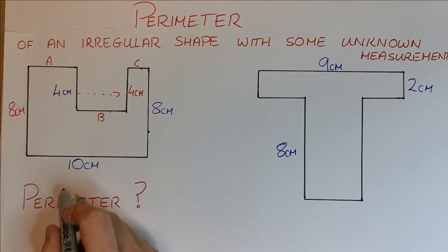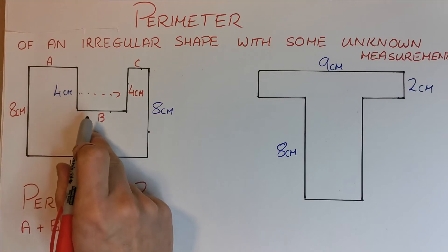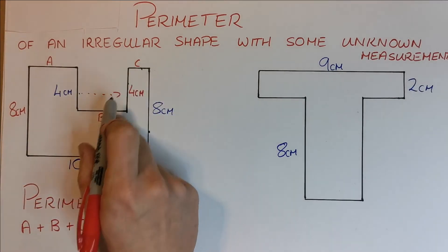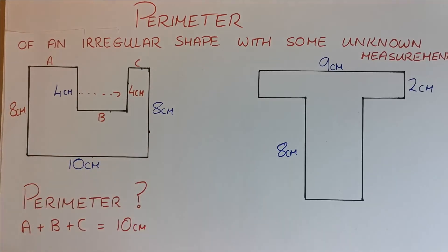But what I do know is, looking at the bottom, I know that A plus B plus C is actually equivalent to that 10cm along the bottom because this length, plus this length, plus this length, if I brought this B line up to here, that would be the same as this one length of 10cm. So while I don't know what A, B and C are individually, I know they all add up to give 10cm.